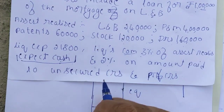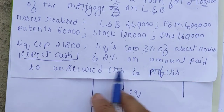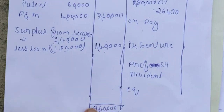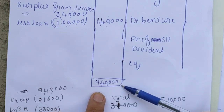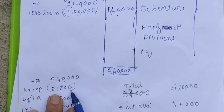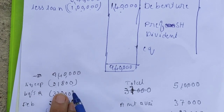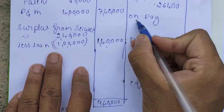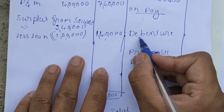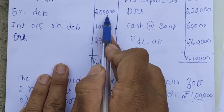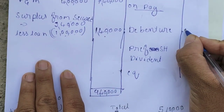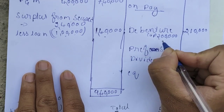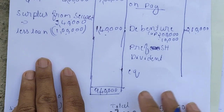Sufficient funds are available since total cash is Rs.9,40,000. We pay one by one. Debenture holders: debenture capital Rs.2,00,000 plus outstanding interest Rs.10,000, total Rs.2,10,000 to be paid to debenture holders. After debenture holders, we pay unsecured creditors. Total creditors are Rs.2,90,000; secured creditors already paid Rs.1,00,000; unsecured creditors = Rs.2,90,000 − Rs.1,00,000 = Rs.1,90,000.